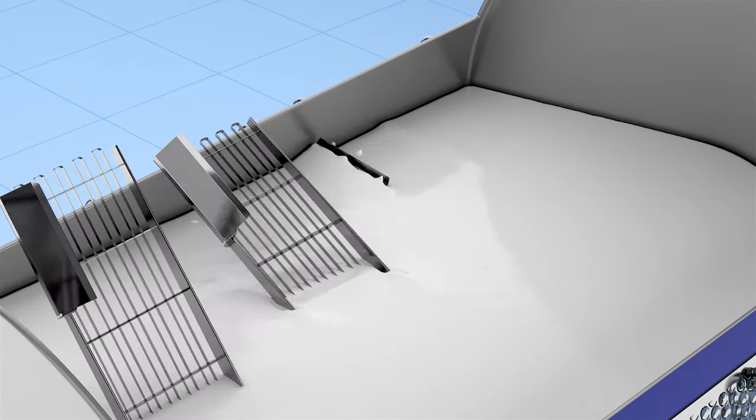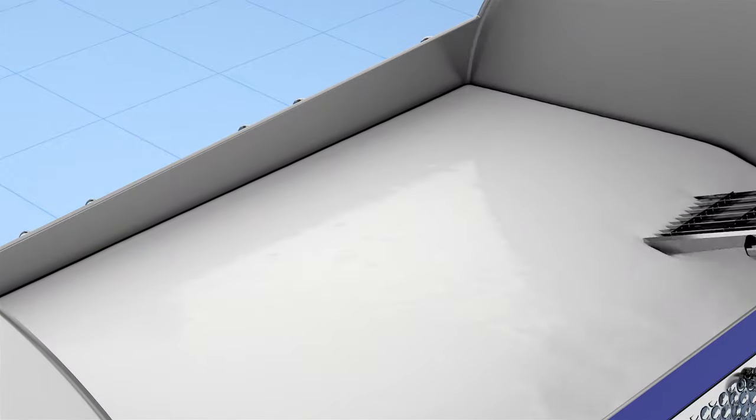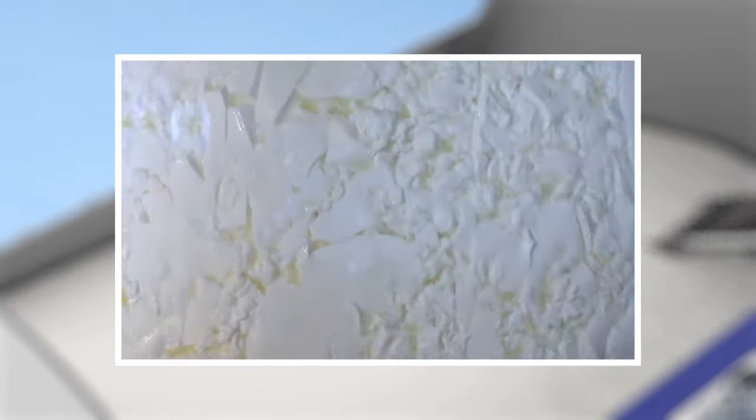As soon as the milk has the right level of coagulation, it is cut up with knives. This breaks it up into curd grains, which are solid, and whey, which is liquid. Cheese is made out of these curd grains.